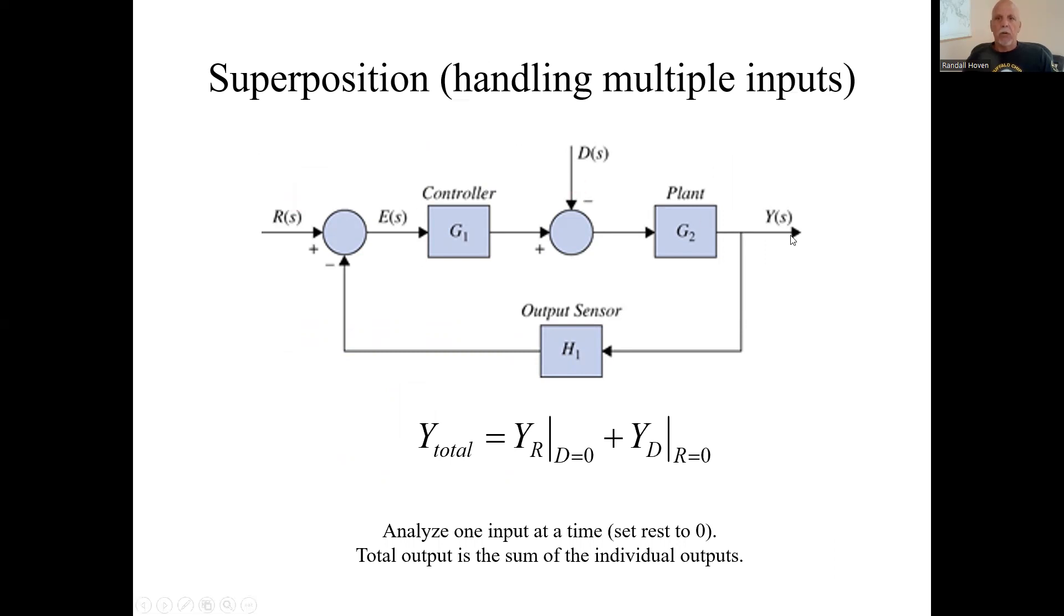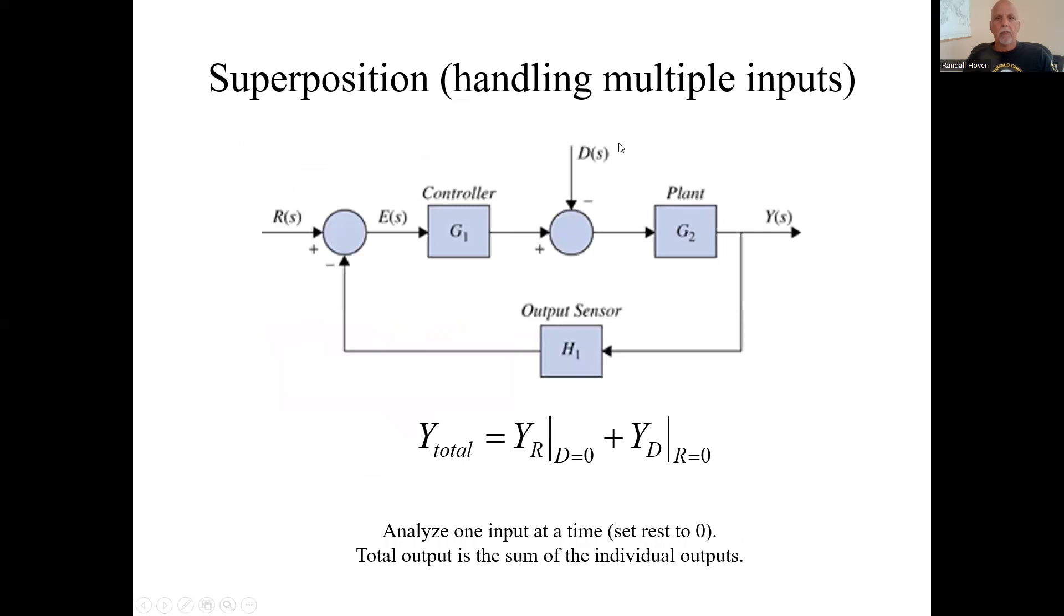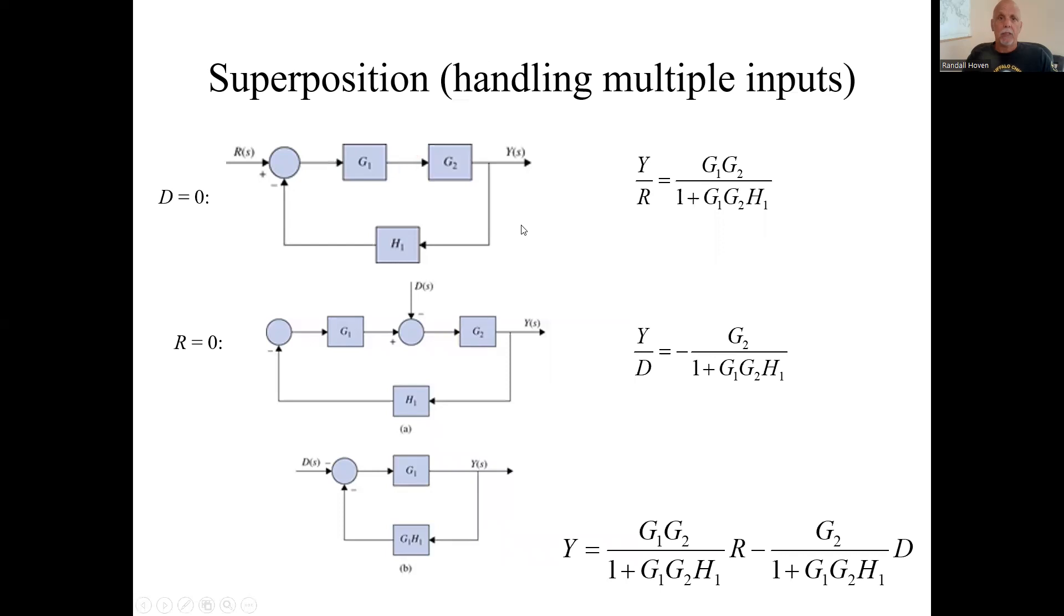We'll set D equal to zero and find out what that transfer function from R to Y is. We had a disturbance come in here, but if it's zero, it has no impact. This guy is zero. You might as well just get rid of this whole adding or subtracting zero from this signal. That's our basic feedback loop here.